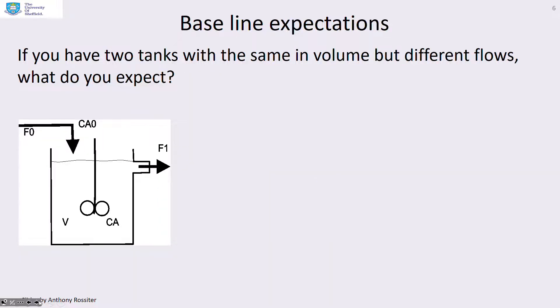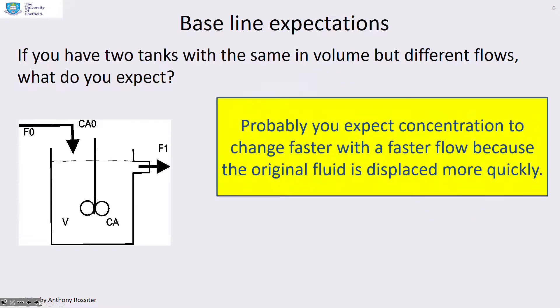More baseline expectations. If you've got two tanks that have the same volume but different flows, what do you expect? Well probably you would expect the concentration to change much faster with a faster flow rate because the original fluid in the tank is going to get displaced much more quickly. So in other words, a bigger flow is likely to imply a smaller time constant.